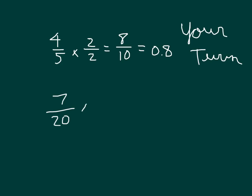For the second one, we can multiply by 5 over 5. 7 times 5 is 35. 20 times 5 is 100. So we have 35 hundredths, which is also written as 0.35. So those are the two decimal equivalents for 4 fifths and for 7 twentieths.